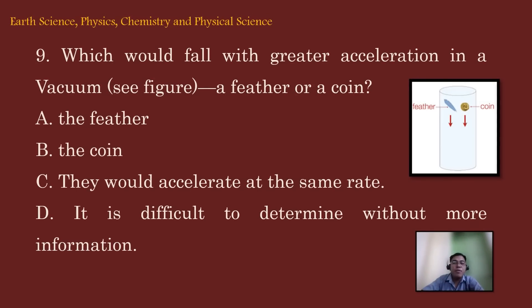Let's move on to item number nine. Which would fall with greater acceleration in a vacuum? Let's see the figure. A feather or a coin? Letter A. A feather. B. The coin. C. They would accelerate at the same rate. And D. It is difficult to determine without more information.